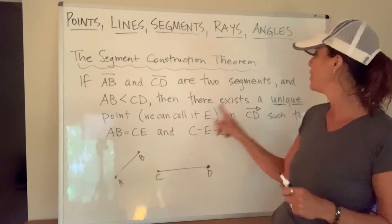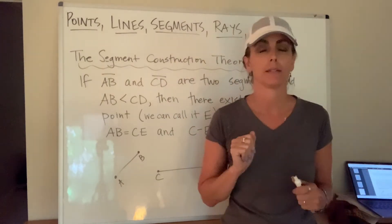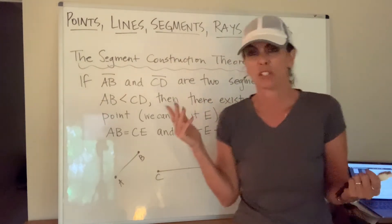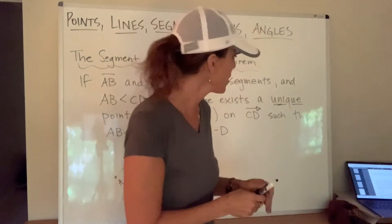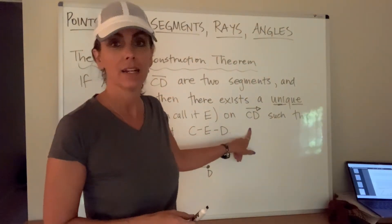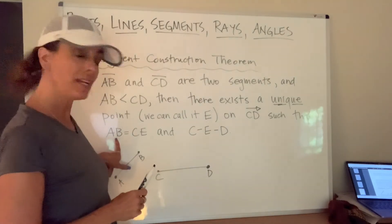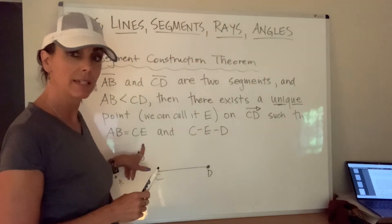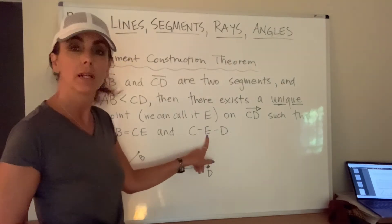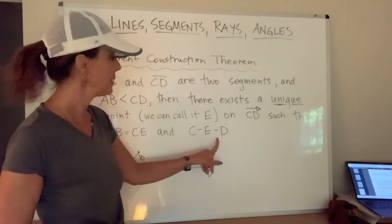Then there exists a unique point. Let's just call it E, point E, on ray CD, such that the distance between A and B is equal to the distance between C and E, and E is going to be between point C and D.